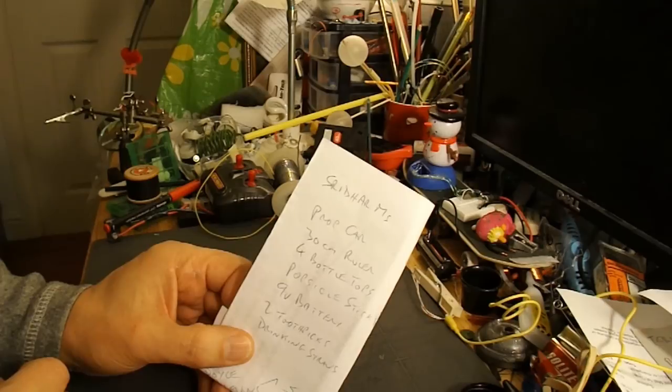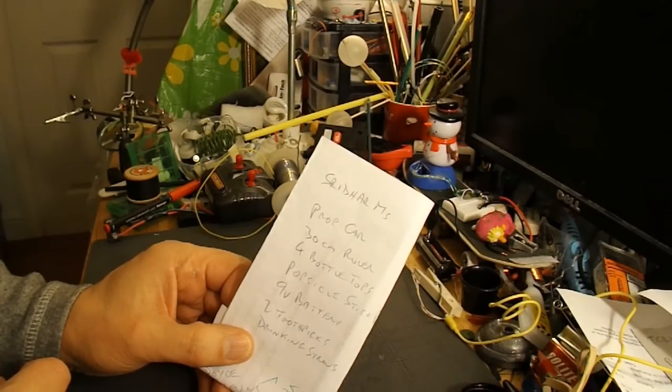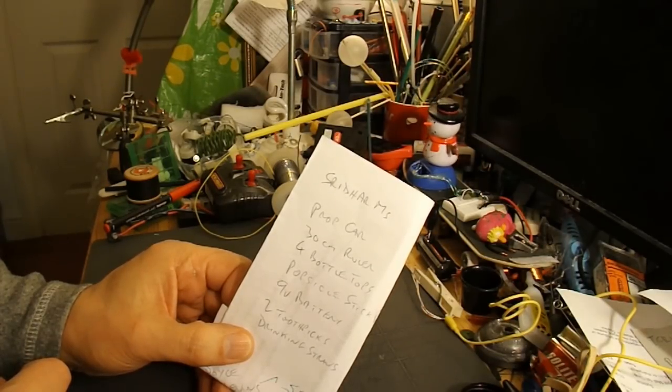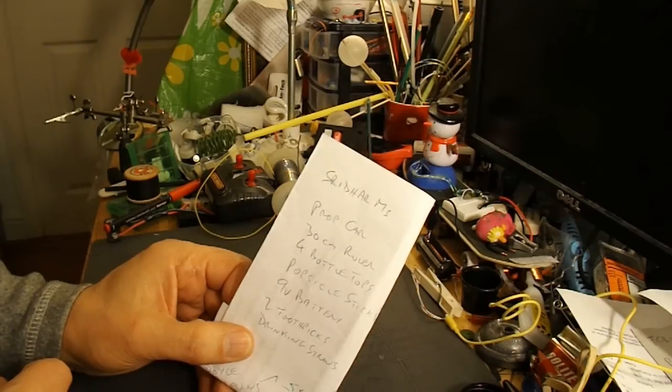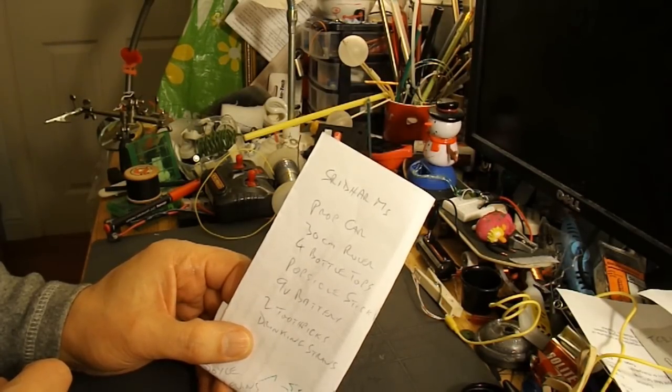He wants a propeller-driven car made from a 30cm ruler, four bottle tops, a popsicle stick for the propeller, a 9V battery, two toothpicks, and drinking straws. I think we probably need an electric motor in there as well.